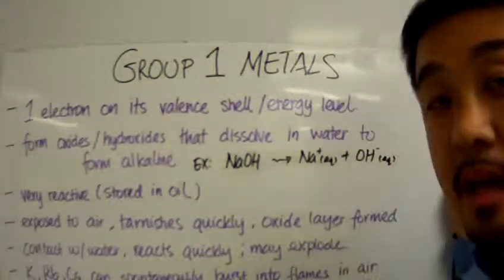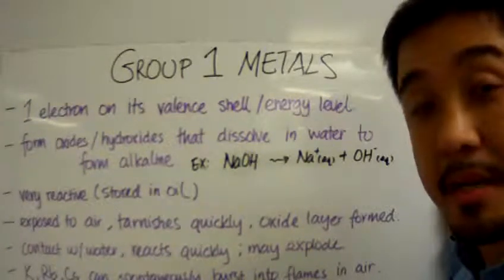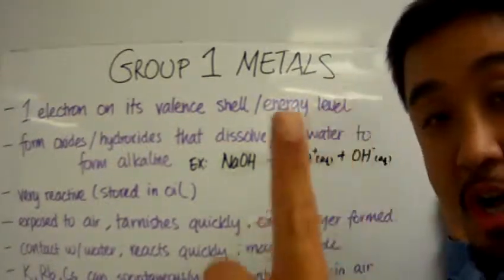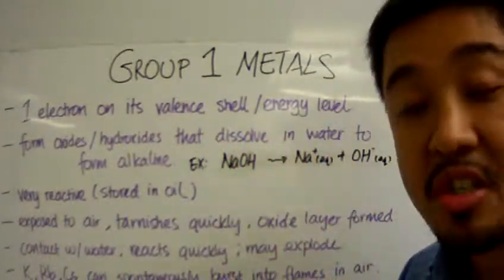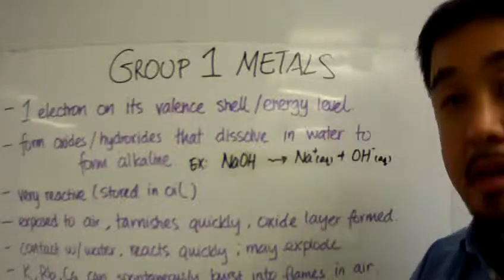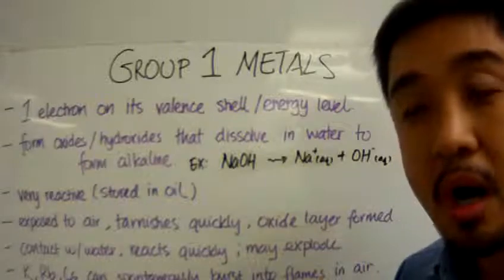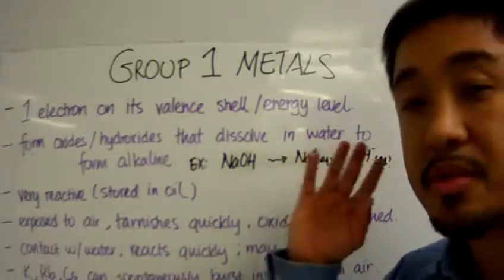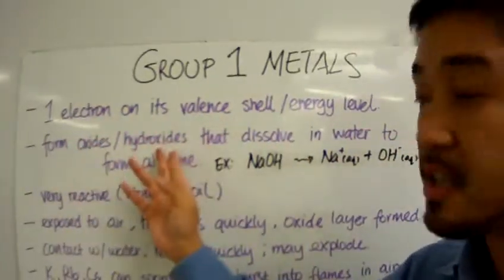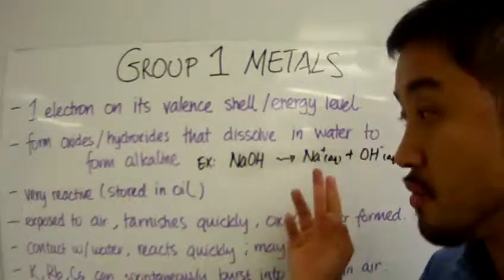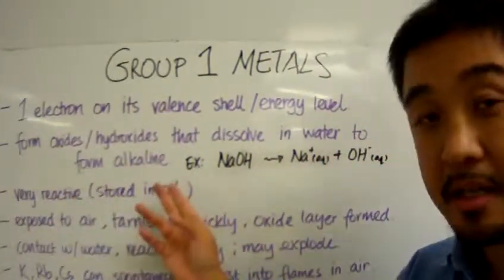All group 1 metals have one electron on their valence shell. When group 1 elements are exposed to oxygen or water, they form oxides and hydroxides that dissolve in water to form alkaline solutions.